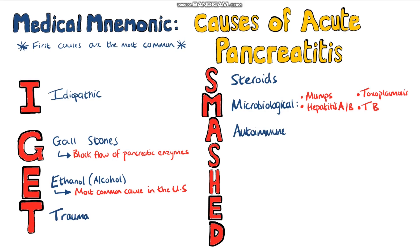Next is A for autoimmune pancreatitis. There are two types recognised: type 1 and type 2. Type 1 is now recognised as a manifestation of IgG4-related disease.